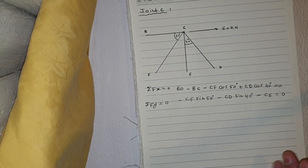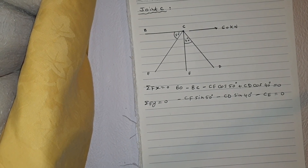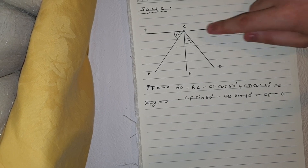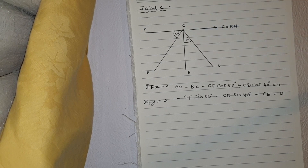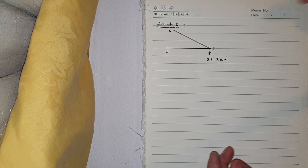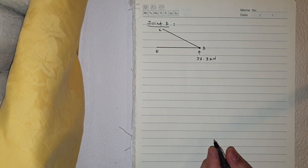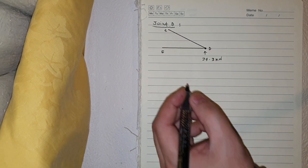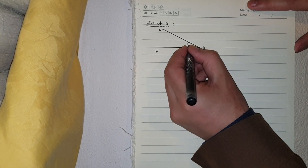Therefore we can't solve joint C now. Let's move to joint D and then joint E. Once I find the values at joint D, I'll come back to joint C. I'm going to solve the member at joint D first because we have two unknowns. We know this angle is 50 degrees.